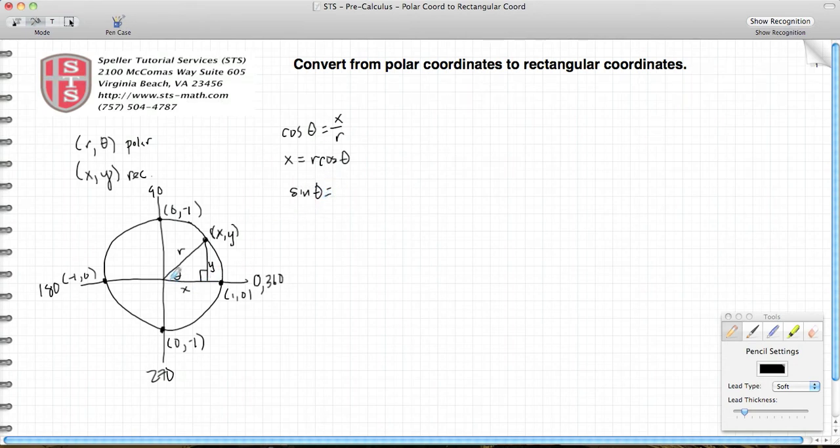If we evaluate that right triangle using the sine trig function, sine has a relationship of opposite over hypotenuse, so that would be y over r. To express that in terms of y, we cross multiply and we get y = r sin θ.